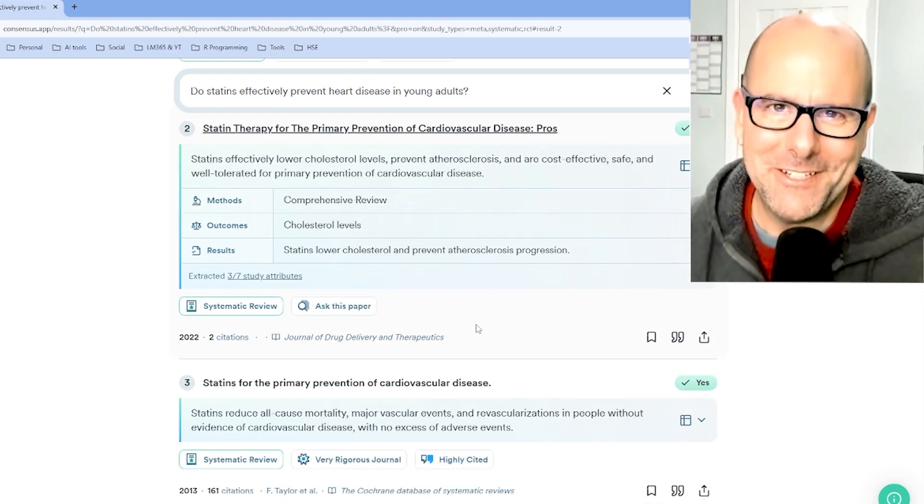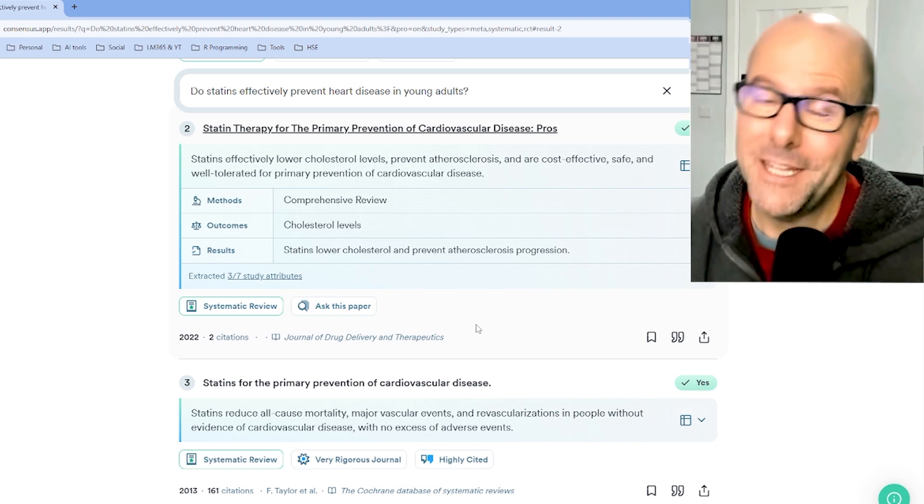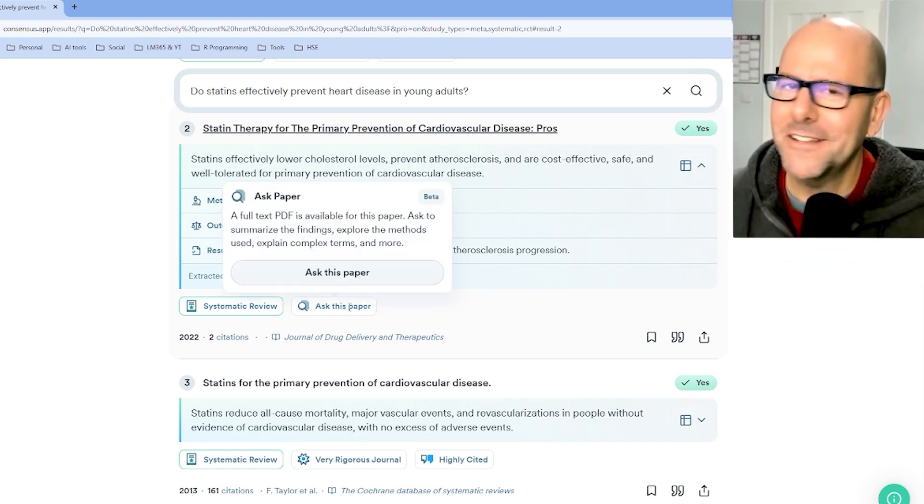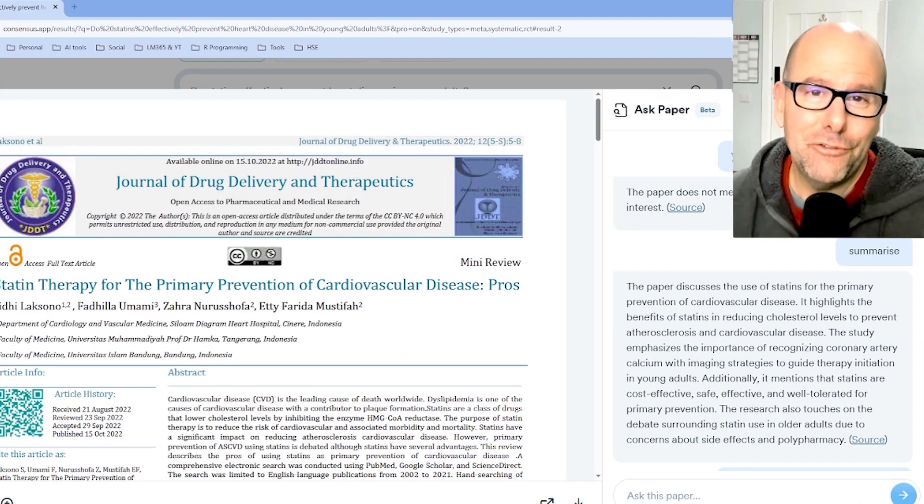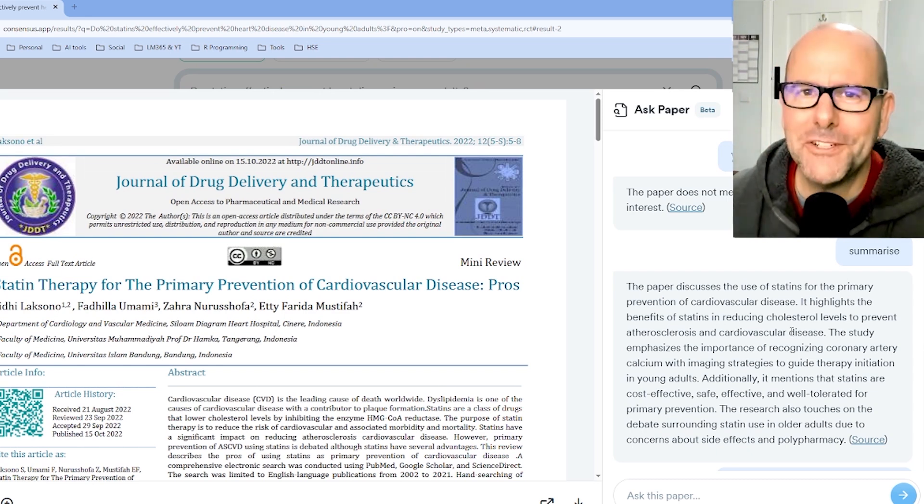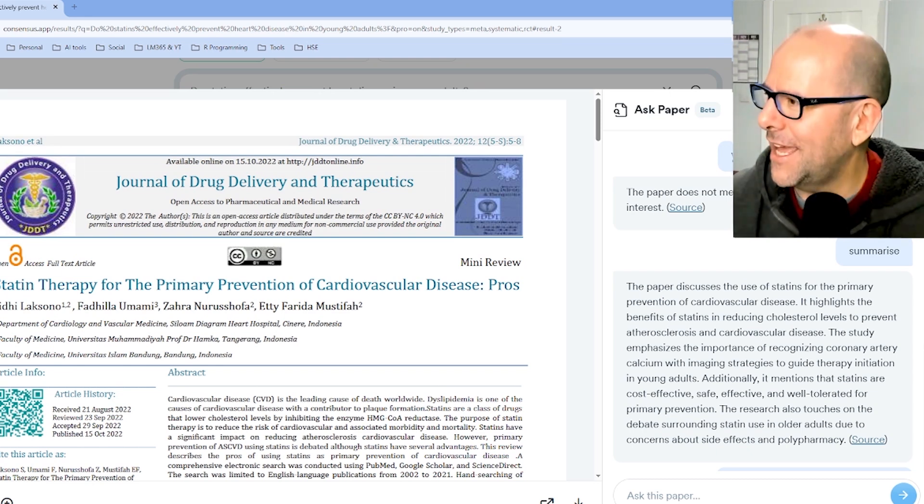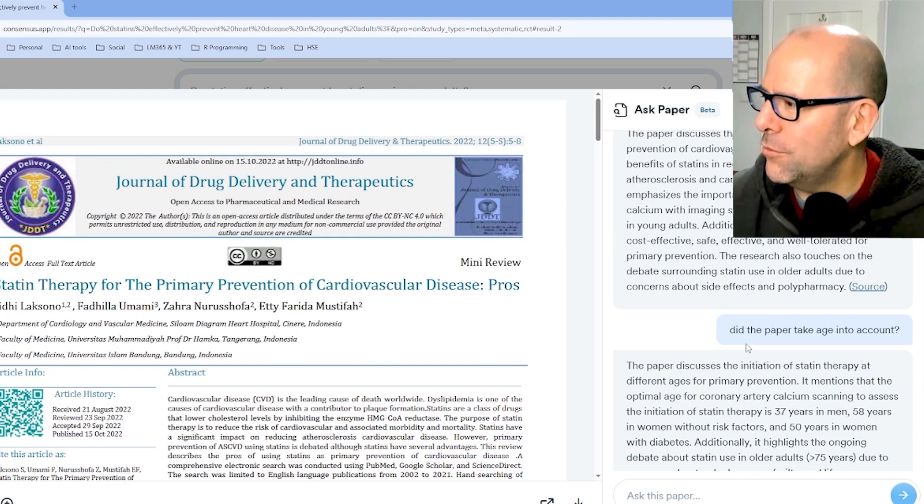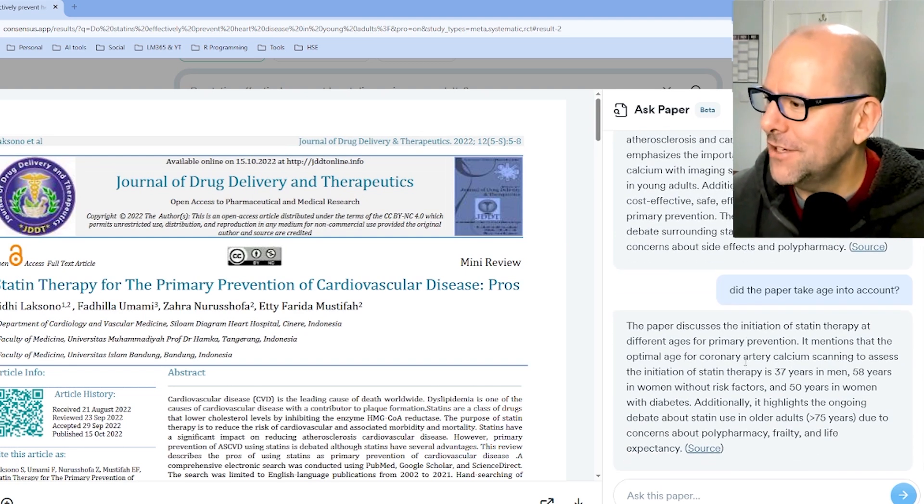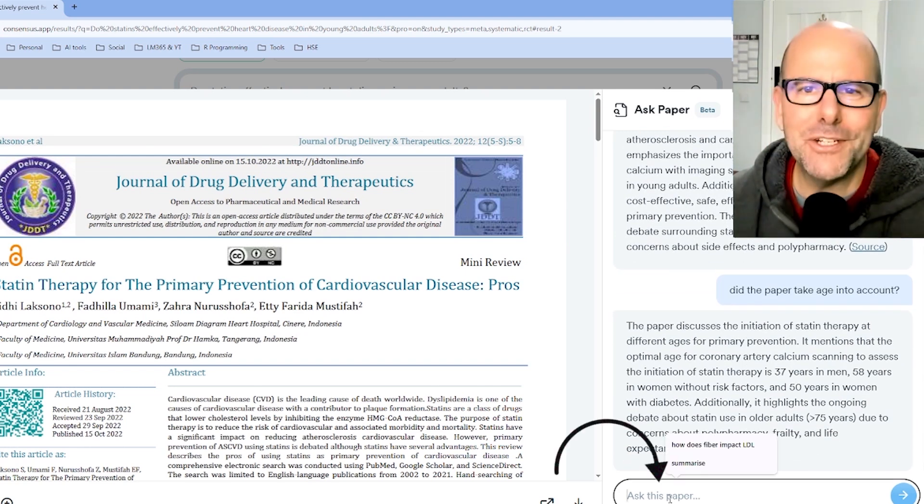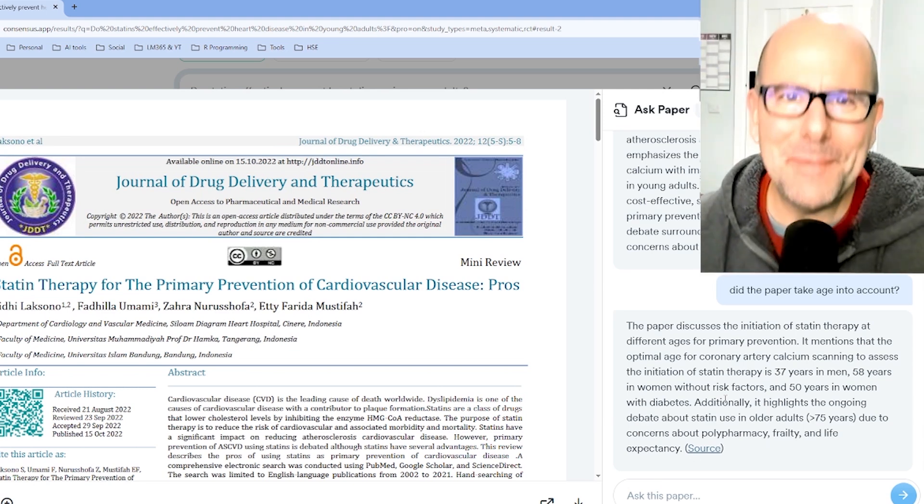And here is one of my favorite features of ConsenSys. Where the paper is available, and if it's not, you can upload it, there is an ask this paper function. Now you can read the paper, but of course you can ask questions and ConsenSys will provide an answer like, were there any conflicts of interest? Summarize the paper for me. Does the paper take age into account? And you can type in any additional questions you want right there and an answer will appear on the screen. Unbelievable.